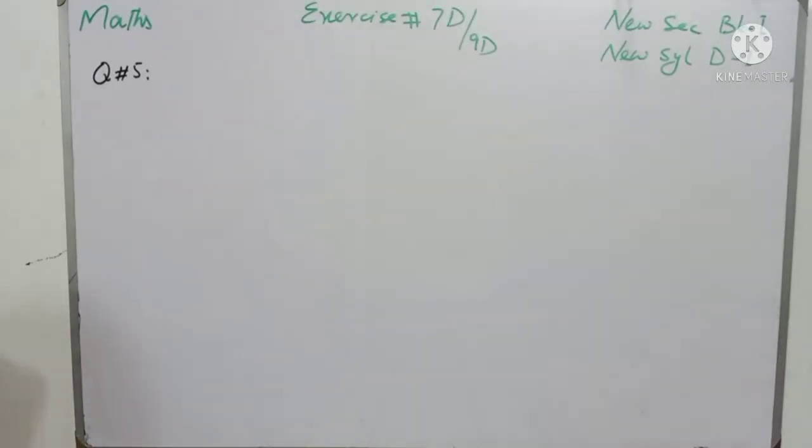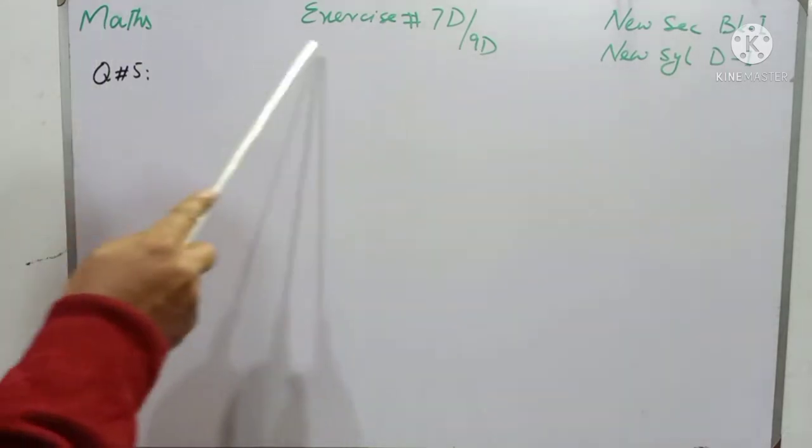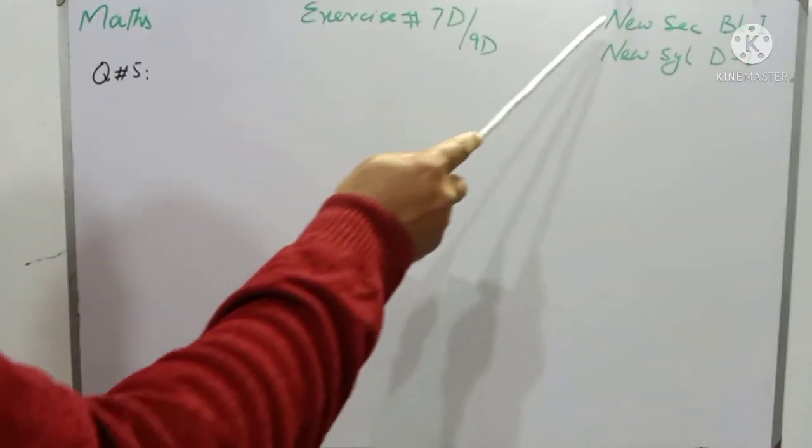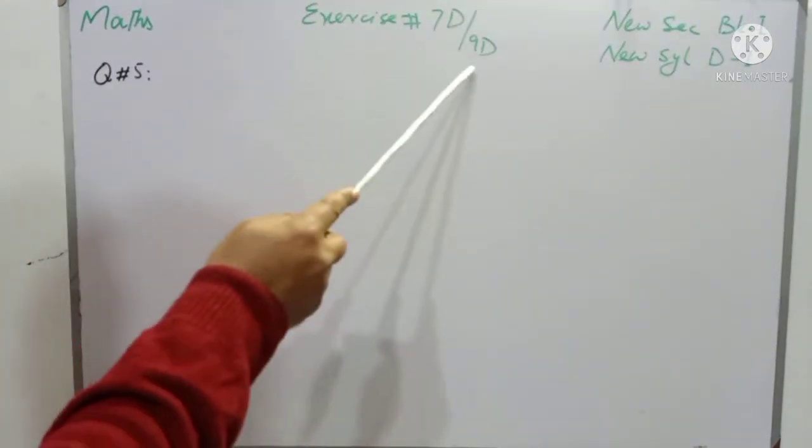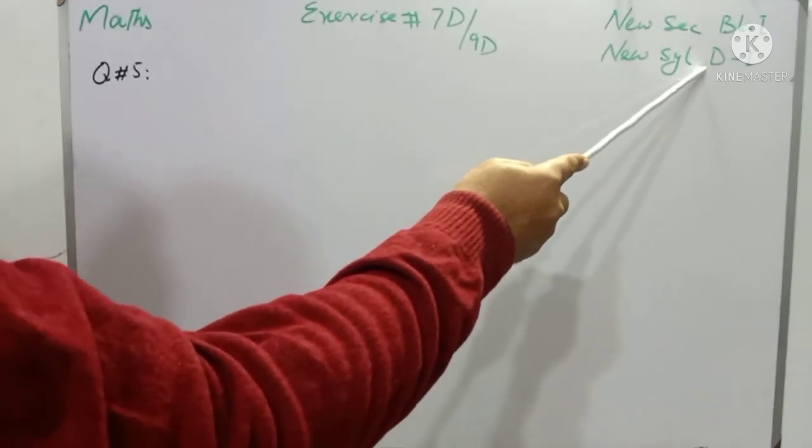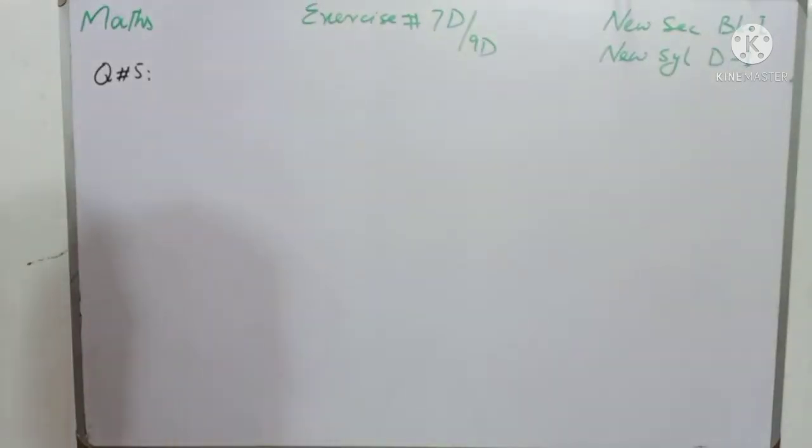Starting with the name of Allah Almighty, who is the Master of the Day of Judgment, and a Pandal of the Prophet Muhammad Sallallahu Alaihi Wasallam. Students, Mathematics Exercise 7D for News Candy Mathematics Book 1 of Sac Students Class 6, and Exercise 9D for News Libus Mathematics D1 for O-Level Students. Question number 5.